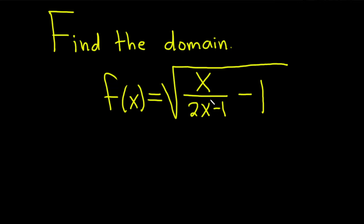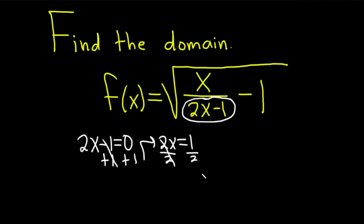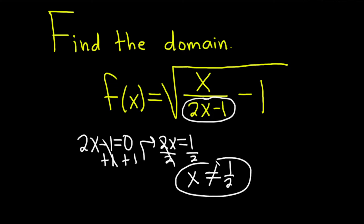Right away, we see there's an issue with the 2x minus 1. If this piece equals zero, we're going to end up dividing by zero. Setting 2x minus 1 equal to zero and solving: we add 1 to both sides to get 2x equals 1, then divide by 2 to get x equals 1 half. So x cannot equal 1 half — plugging it in gives 2 times 1 half minus 1, which is zero in the denominator.